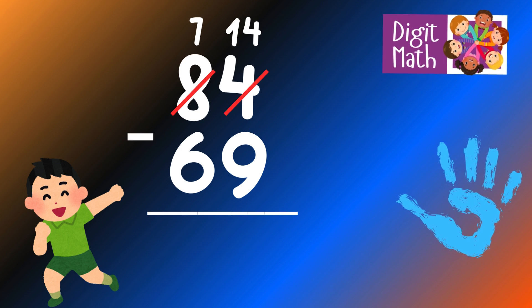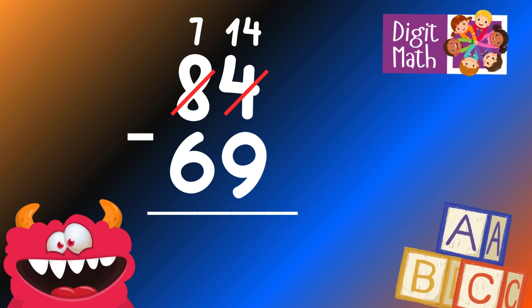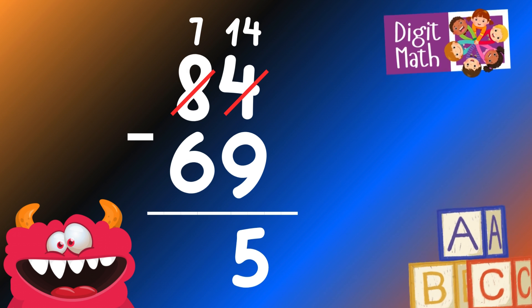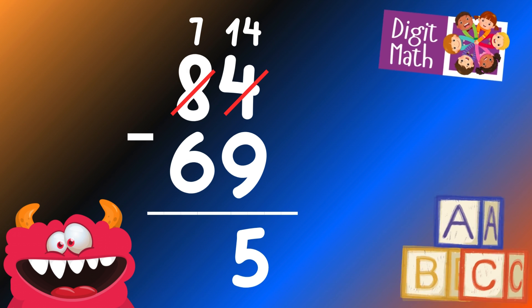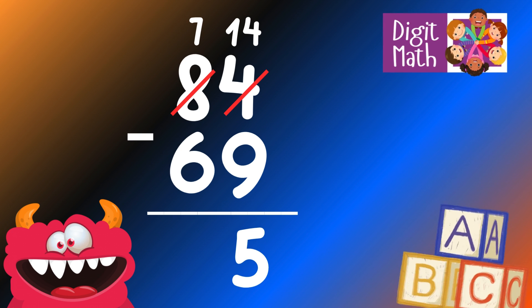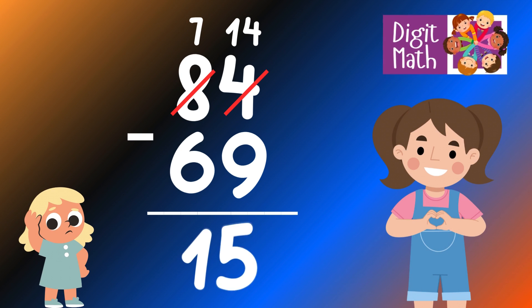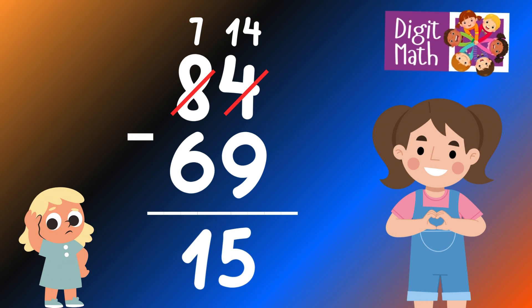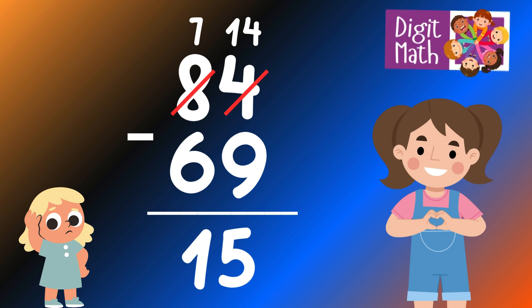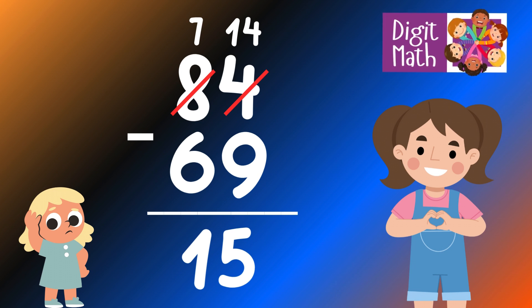Now we have 14 in the Units column. Subtract 9 from 14, which equals 5. In the Tens column, we now have 7. Subtract 6 from 7, which equals 1. So the final result is 84 minus 69 equals 15.